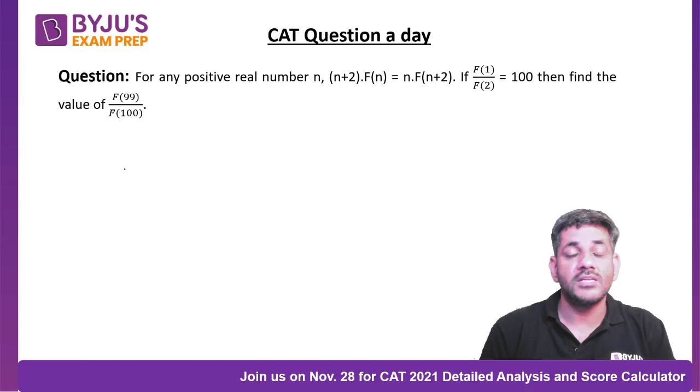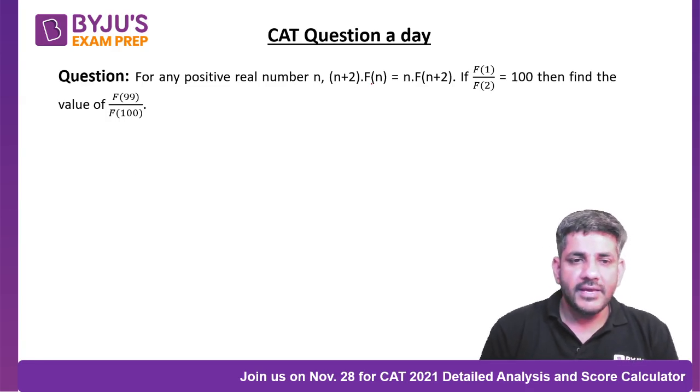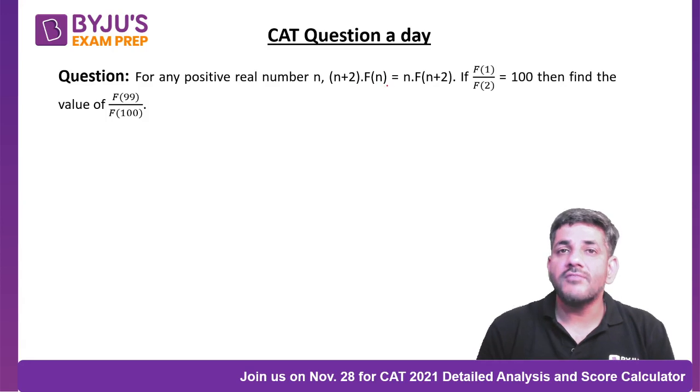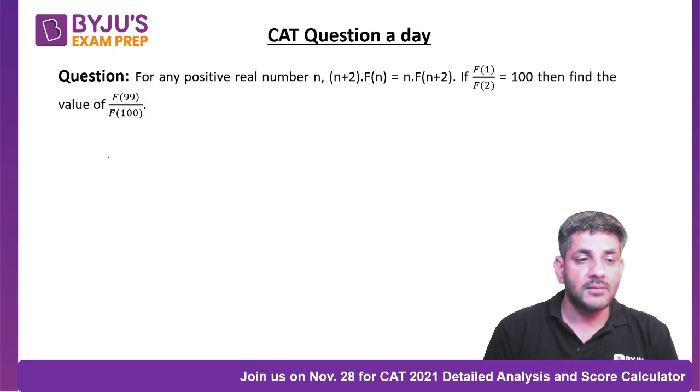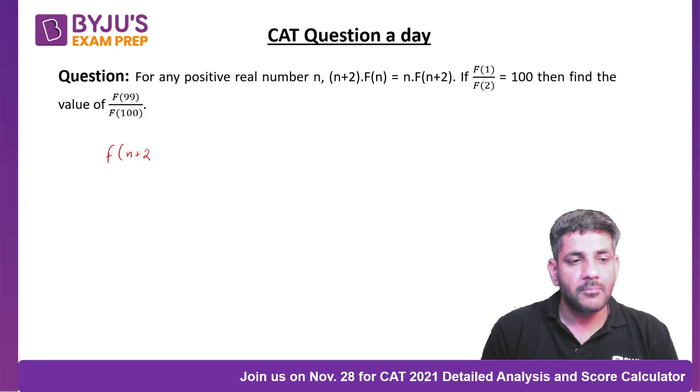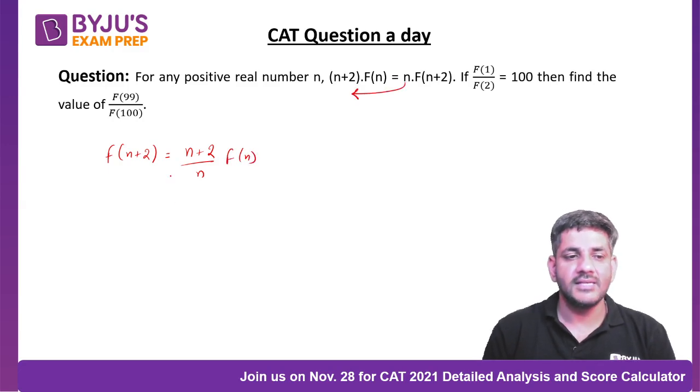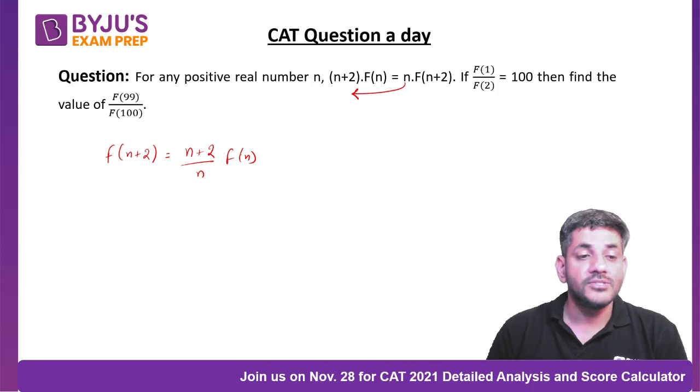Here it is giving that (n+2) times f(n) is n times f(n+2). So from here can I say that f(n+2) equals (n+2)/n times f(n)? I have just taken this n on the other side, so I can say f(n+2) is this.